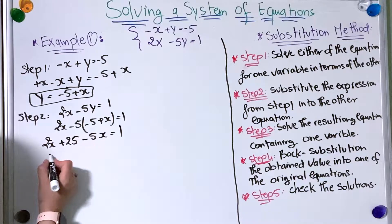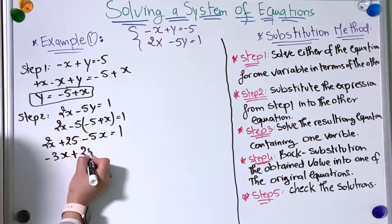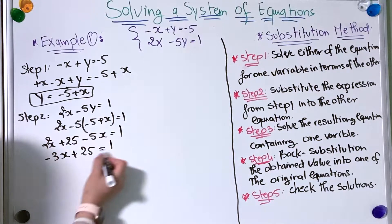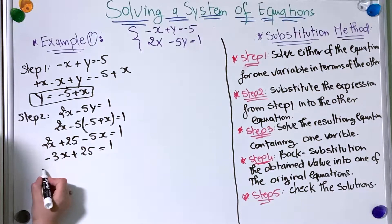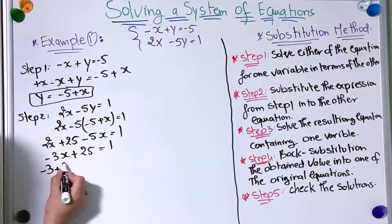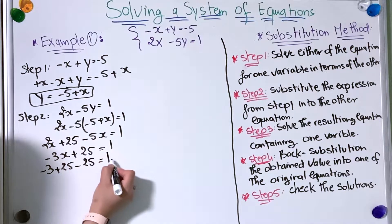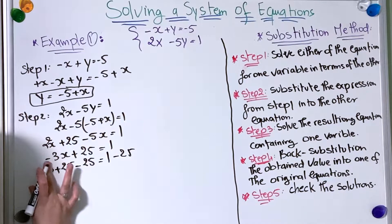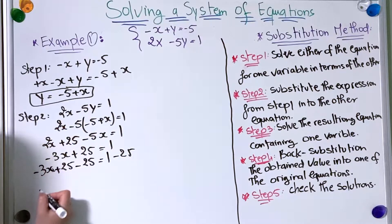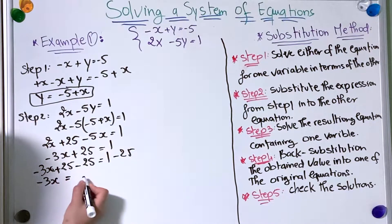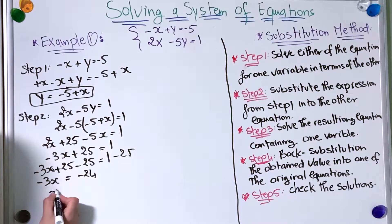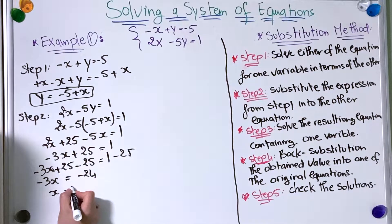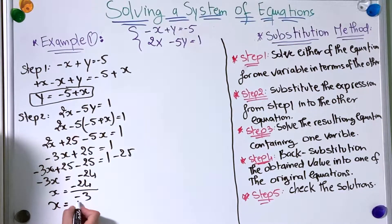So 2x minus 5x equals minus 3x, and plus 25 equals 1. Now I'm going to subtract 25 from both sides: minus 3x equals 1 minus 25, which equals minus 24. Dividing both sides by minus 3, x equals minus 24 divided by minus 3, so x equals 8.